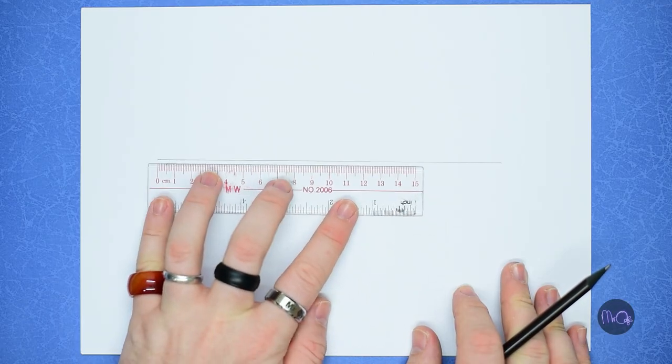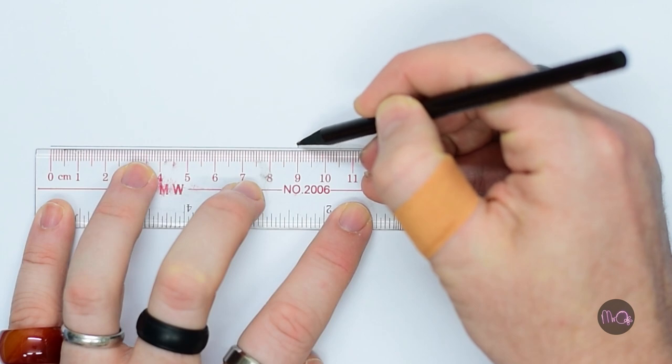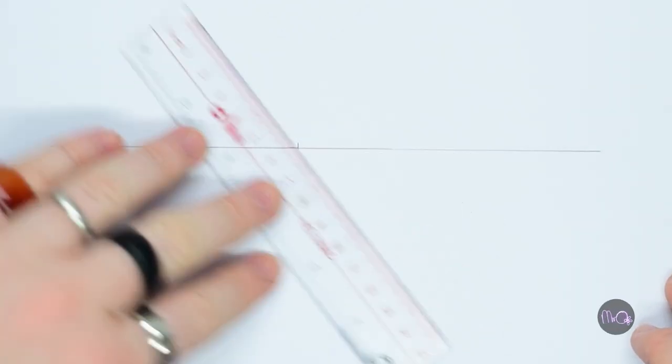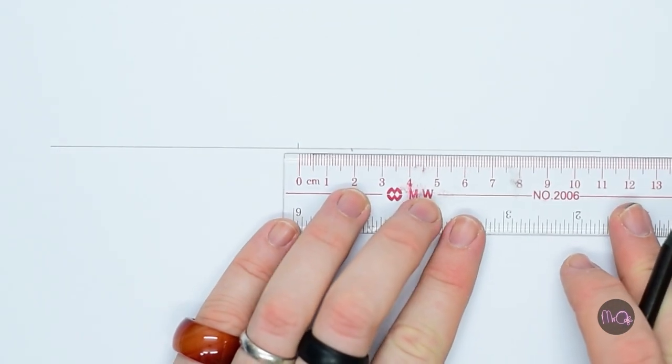If you need to find the middle of a line that's longer than your ruler, simply pick a number and measure it from both sides. Then you can find the middle of this shorter line.